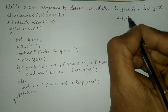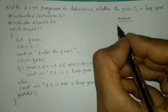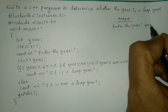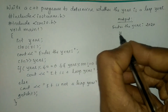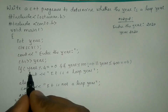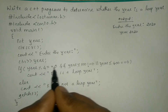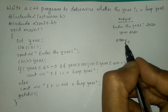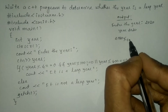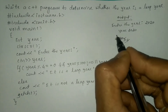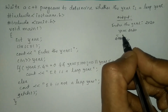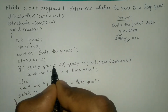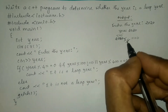Now let us trace through an example. When we compile and run this program it will ask the user to enter the year. I am going to enter 2020. The variable year holds 2020. We check year modulo 4 equals 0 — so 2020 divided by 4 gives remainder 0, which is exactly divisible by 4, so this returns true.